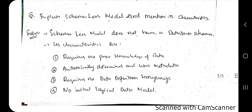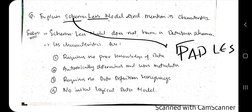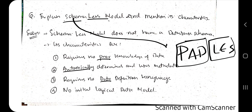The second question is: explain the schema-less model and mention its characteristics. For this, there is a story — wear your headphones. Just replace the word 'schema' with 'pad' — assume schema is a company that produces pads. So schema-less becomes 'pad-less.' The mnemonic is PADLES: P means previous, A means automatically, D means data definition, L means logical, and E and S will be covered next.